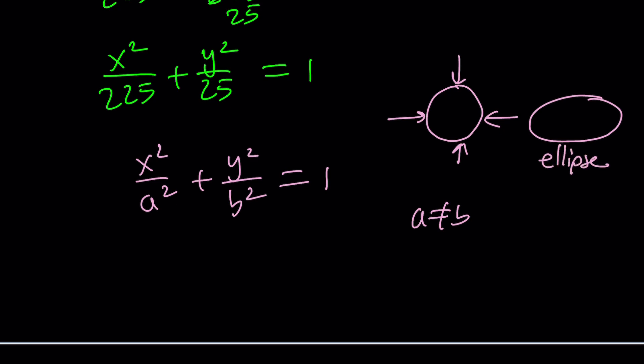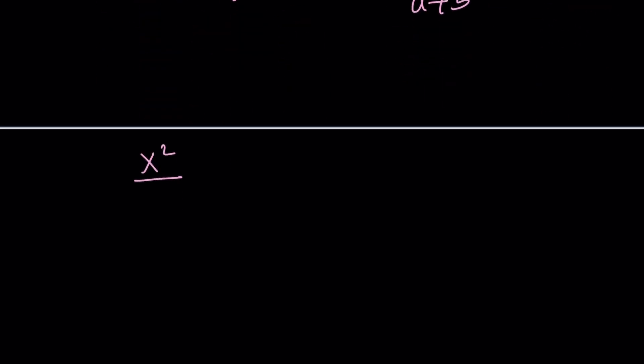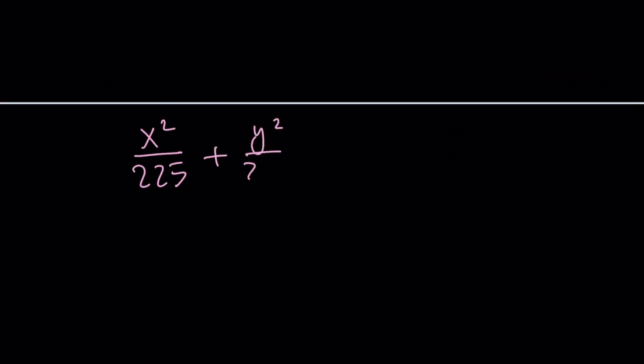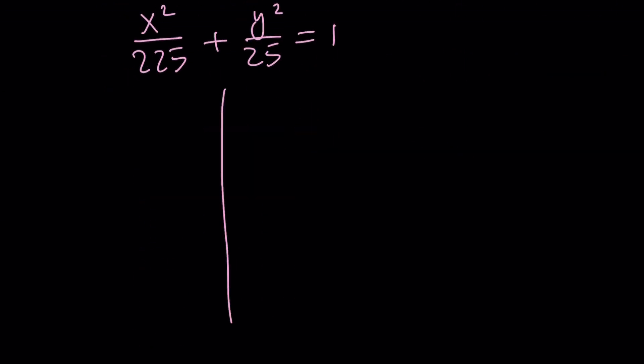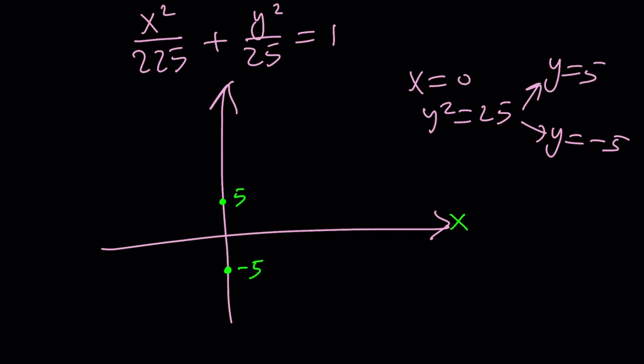We're going to graph it. If you look at the major axis and the minor axis, you can replace x with zero. x = 0 is going to give you y² = 25, which means y is either 5 or -5. So if x is zero, which means you're on the y-axis, you're going to get 5 and -5. Let's mark them. 5 and -5. The reason why I use such a small scale is because my next number is going to be a little bigger than 5.